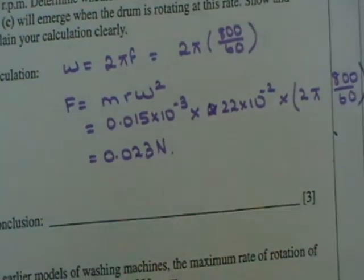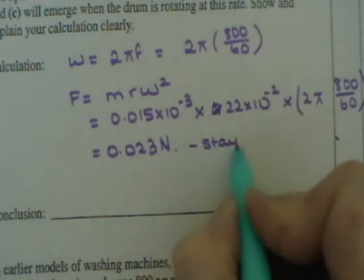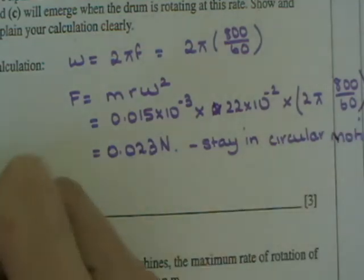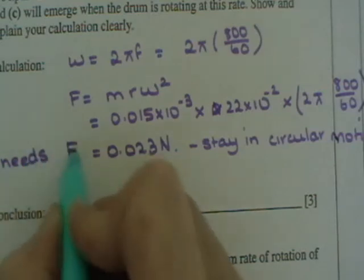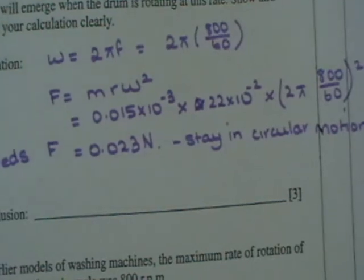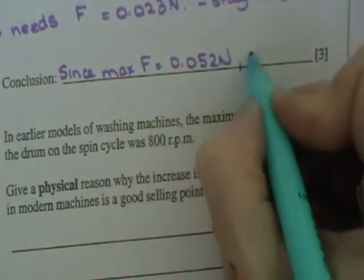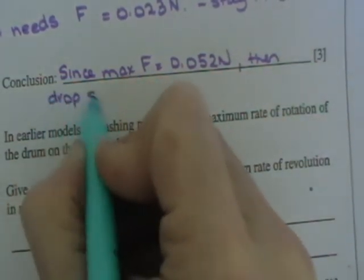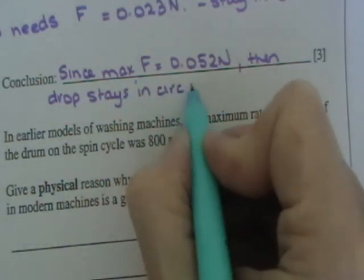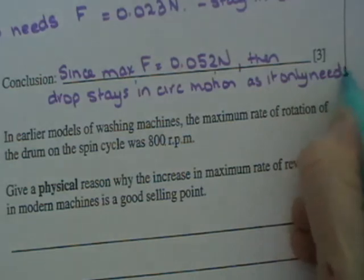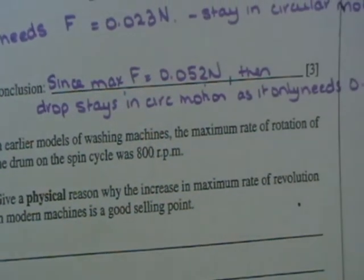So that water droplet needs 0.023 newtons to stay in the drum or to stay in circular motion. So drop needs 0.023 newtons to stay in circular motion at 800 reps per minute. And of course, since maximum amount of friction is 0.052 newtons, then drop stays in as it only needs 0.023 newtons from our calculation.